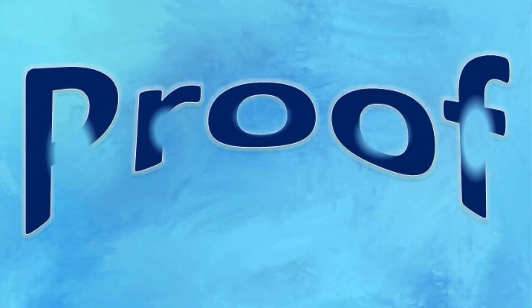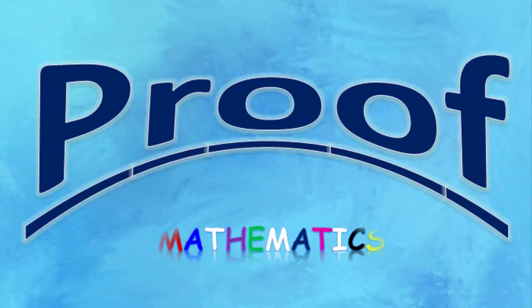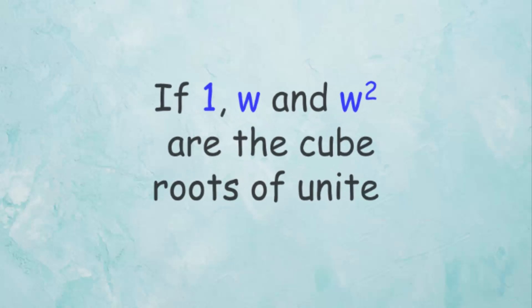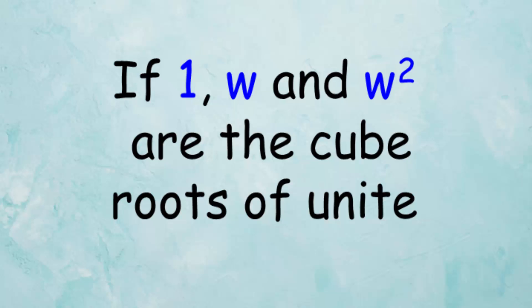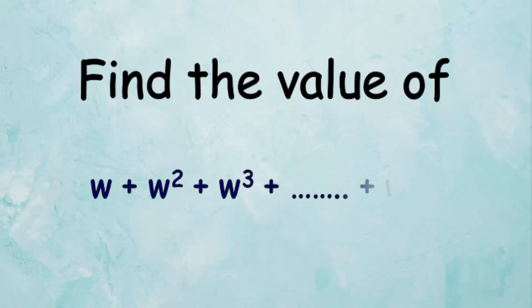Hello, welcome to L Proof Learning Channel. In this video we have a challenge for the cube roots of unity. If 1, omega, and omega squared are the cube roots of unity, find the simplest form of the expression omega plus omega squared plus omega cubed and so on until we get to omega to the power of 100.